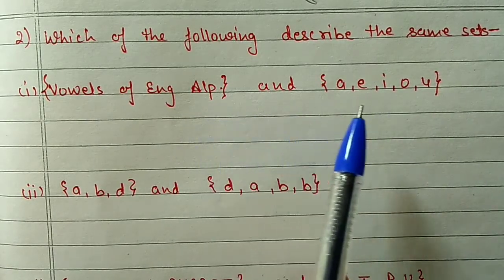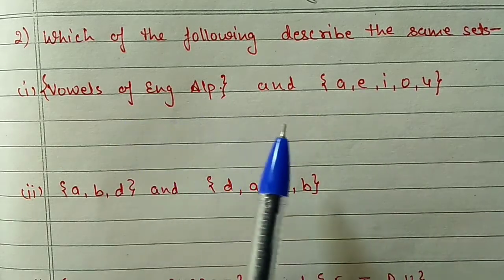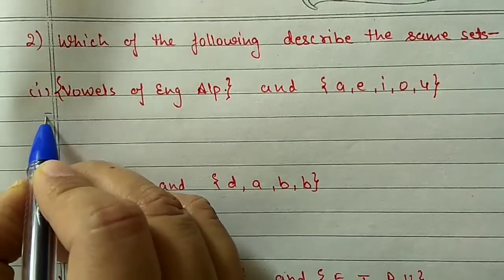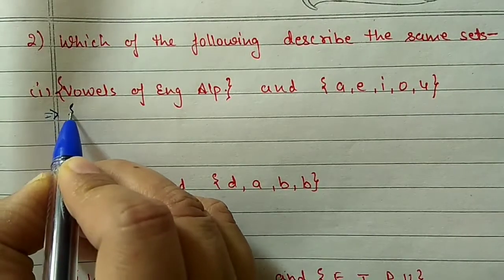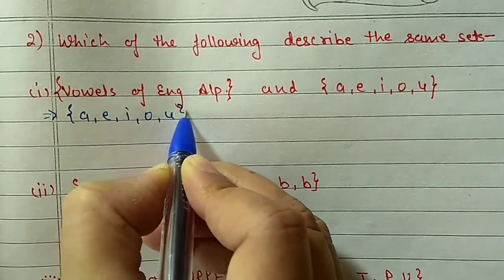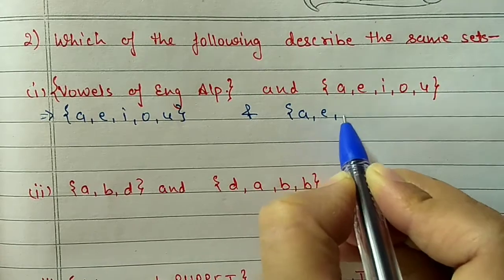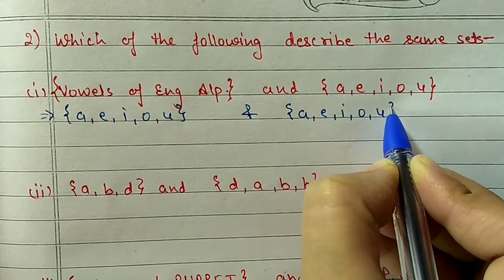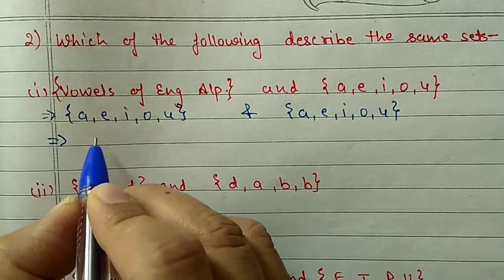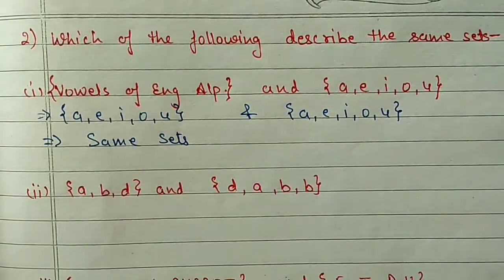Part (i): We change the description form into tabular form. The vowels of the English alphabet are A, E, I, O, U. The second set is also given as A, E, I, O, U. So both sets are the same set - both are equal.